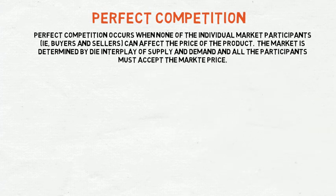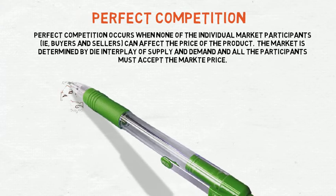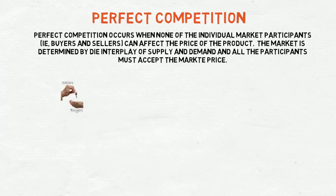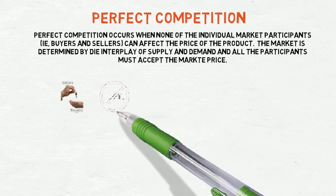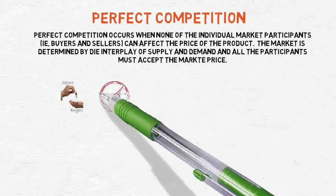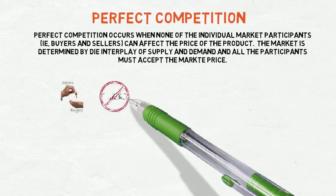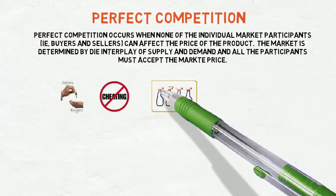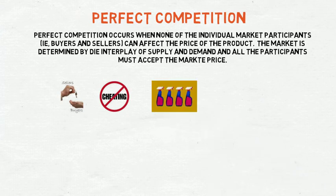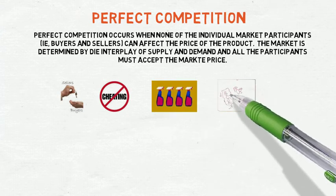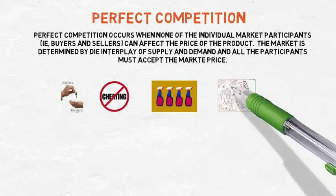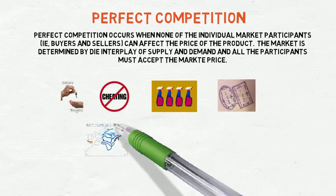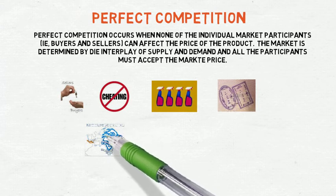If a perfect competitive market exists, the following conditions are in place: a large number of buyers and sellers; no collusion between sellers; all goods sold in the market must be identical; complete freedom of entry and exit into the market; and all buyers and sellers must have complete knowledge of the market conditions.